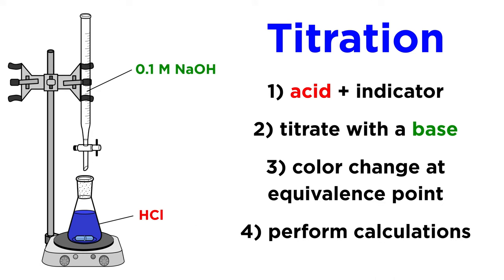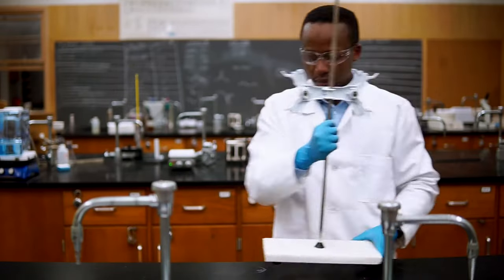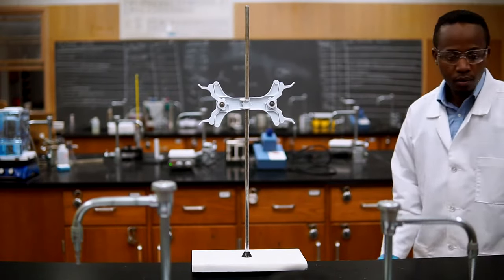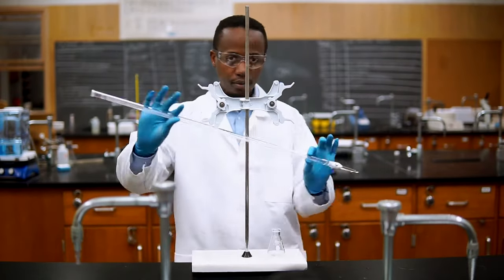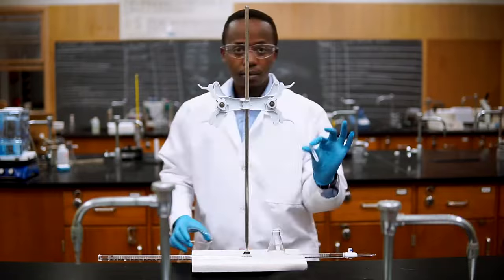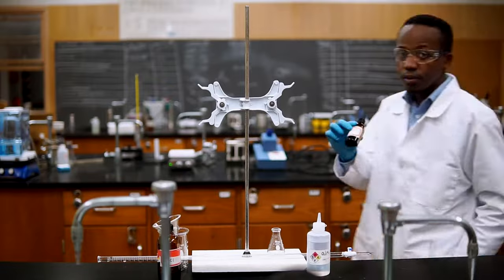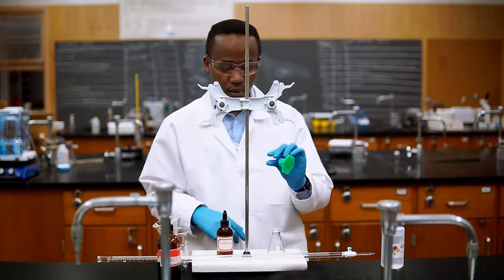Today we will be using titration to find the concentration of a hydrochloric acid solution by using 0.1 molar sodium hydroxide as the titrant. To start, we'll need a ringstand fixed with a burette clamp, an Erlenmeyer flask, a burette, a beaker, a glass funnel, our acid and our base, some indicator, and a graduated cylinder.